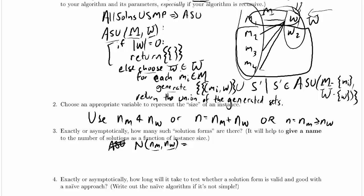So how many solutions do we produce when nw is equal to 0? We produce one solution if nw is equal to 0.